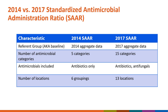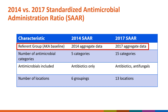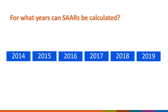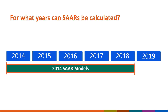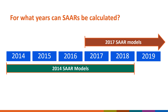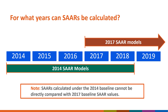A summary of the differences between 2014 baseline and 2017 baseline SARs is shown here. The referent group or baseline population differs. The 2017 baseline SAR has a greater number and type of antimicrobial categories as well as locations modeled than the original 2014 baseline SAR. 2014 baseline SAR reports are available for 2014 through 2018 data, while 2017 baseline SAR reports are available for 2017 data moving forward. SARs calculated under the 2014 baseline cannot be directly compared with 2017 baseline SAR values.